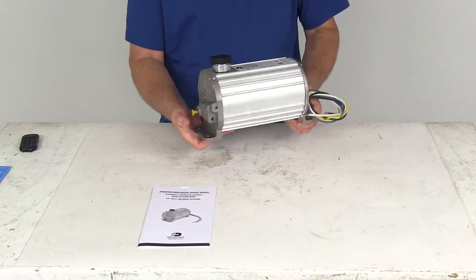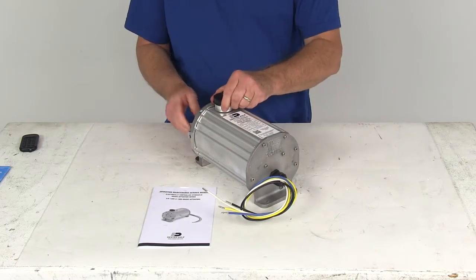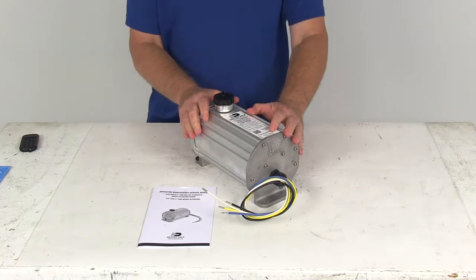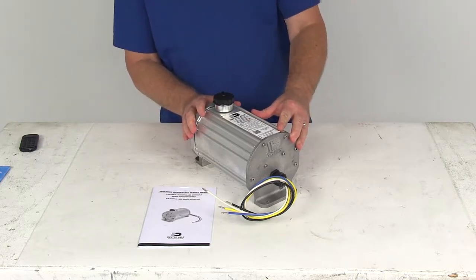This electric over hydraulic brake actuator will activate your trailer's hydraulic brakes when you apply the brakes in your tow vehicle. It does require a brake controller to send the signal from the tow vehicle to the actuator when the brakes are applied.